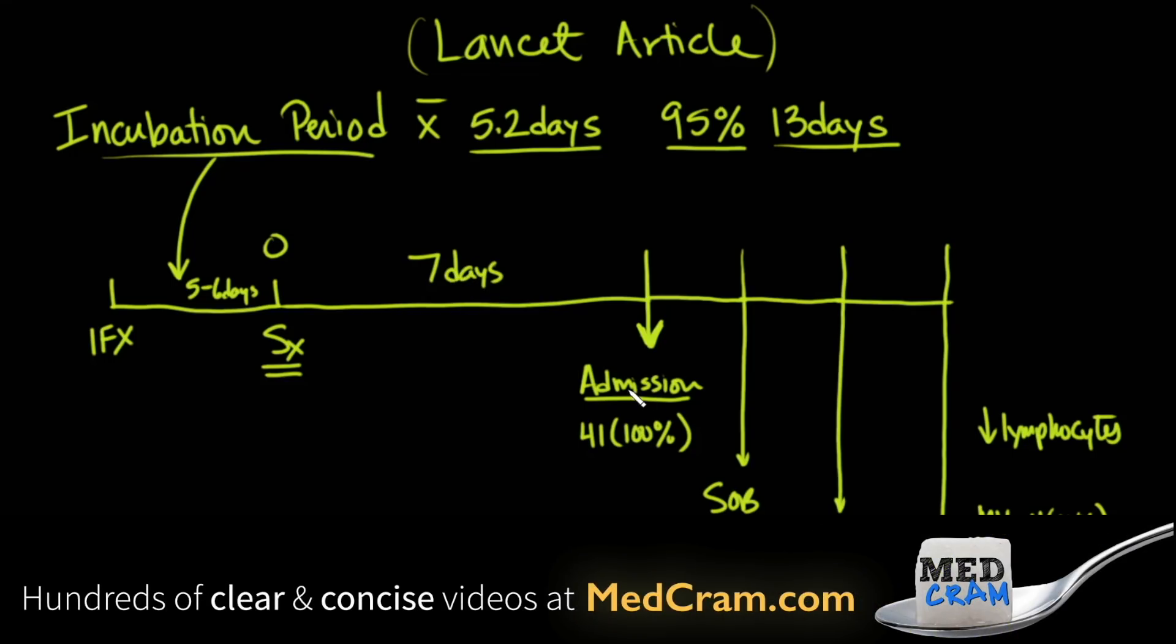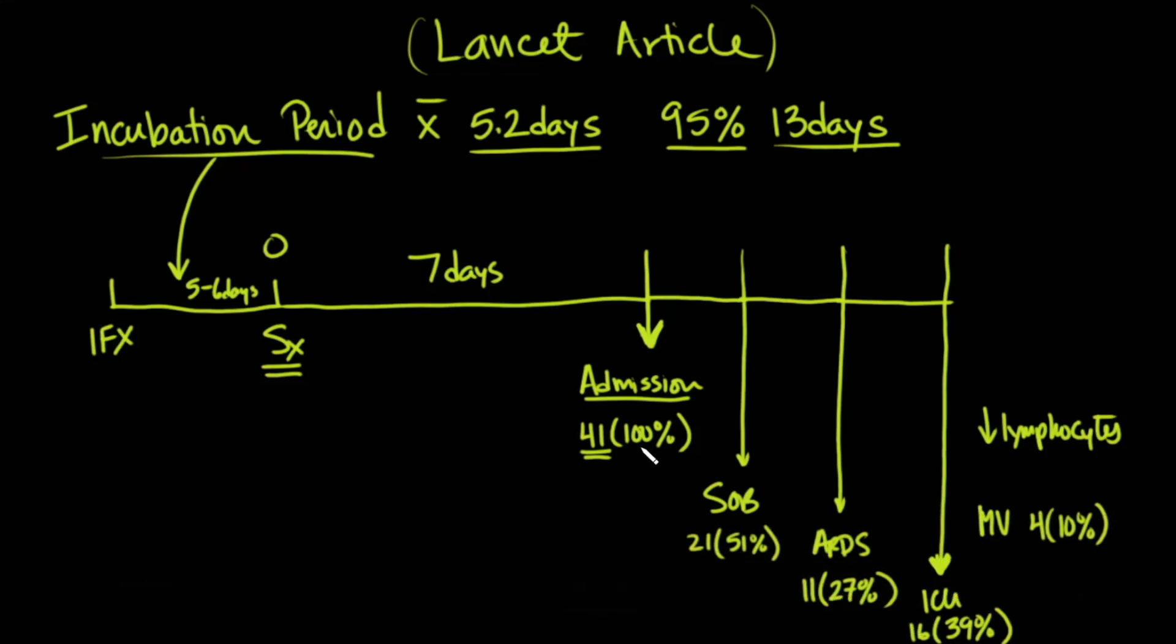And then from admission, that was 100% of the cohort that was looked at in the study, because they looked at those 41 patients. Within a day of admitting to the hospital, about 51% of them developed shortness of breath. Another day later, 27% went into ARDS. And if you want more information about ARDS, look at our MedCram video on this channel titled How Coronavirus Kills.